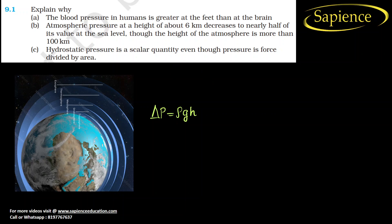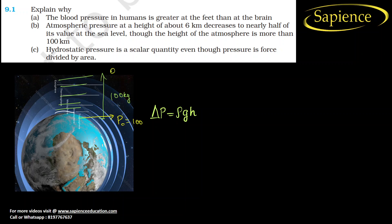The atmosphere has several layers. Its total height is 100 km. If pressure at the bottom is P = 100 and at the top is 0, then using the formula rho*g*h, we would expect 50 at the midpoint. But we observe that pressure becomes half at only 6 km.